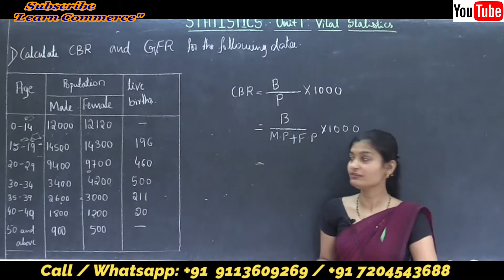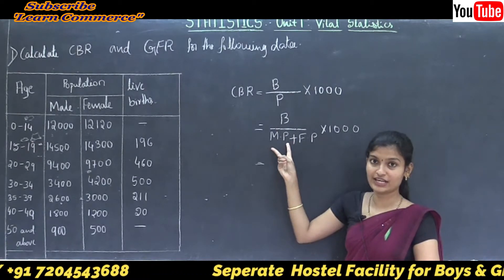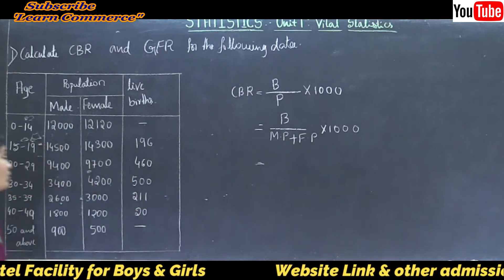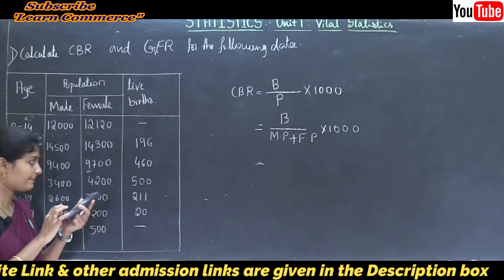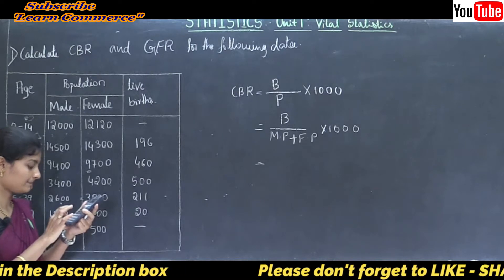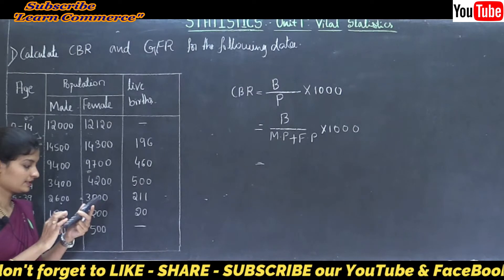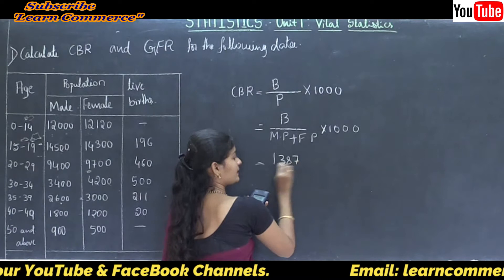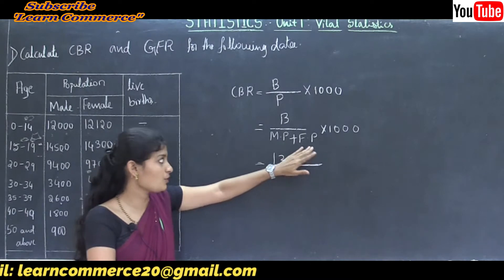Now based on our formula, first we need to calculate total of live births, total of female population, and total of male population. First I will calculate total of live births. That is 196 plus 460 plus 500 plus 211 plus 20. The total is 1387.